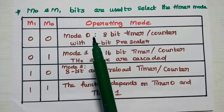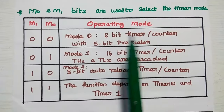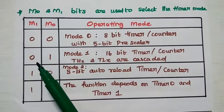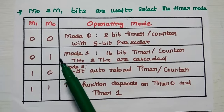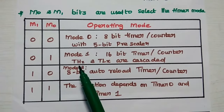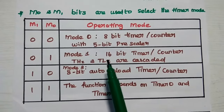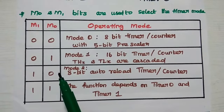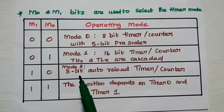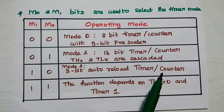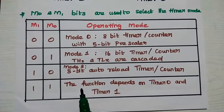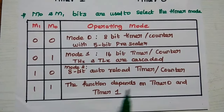The combination of M1 and M0 defines the operating mode. M1=0, M0=0 defines Mode 0: an 8-bit timer/counter with a 5-bit prescaler, making it a 13-bit timer. M1=0, M0=1 defines Mode 1: a 16-bit timer/counter where both the high byte and low byte are cascaded. M1=1, M0=0 defines Mode 2: an 8-bit auto-reload timer/counter. M1=1, M0=1 defines Mode 3, whose function depends on Timer 0 or Timer 1.